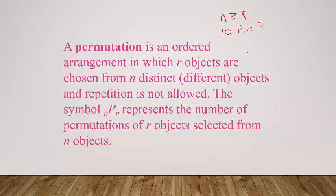The symbol nPr, where n and r are subscripted, represents the permutations of r objects selected from n objects. Now, we're talking about ordered arrangements here, so the thing about permutations that's incredibly important is that order is important — it matters.